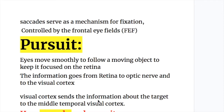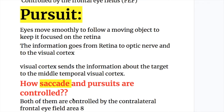Saccades serve as a mechanism for fixation and they are controlled by frontal eye field area A. In pursuits, the eye moves smoothly to follow a moving object to keep it focused on the retina.